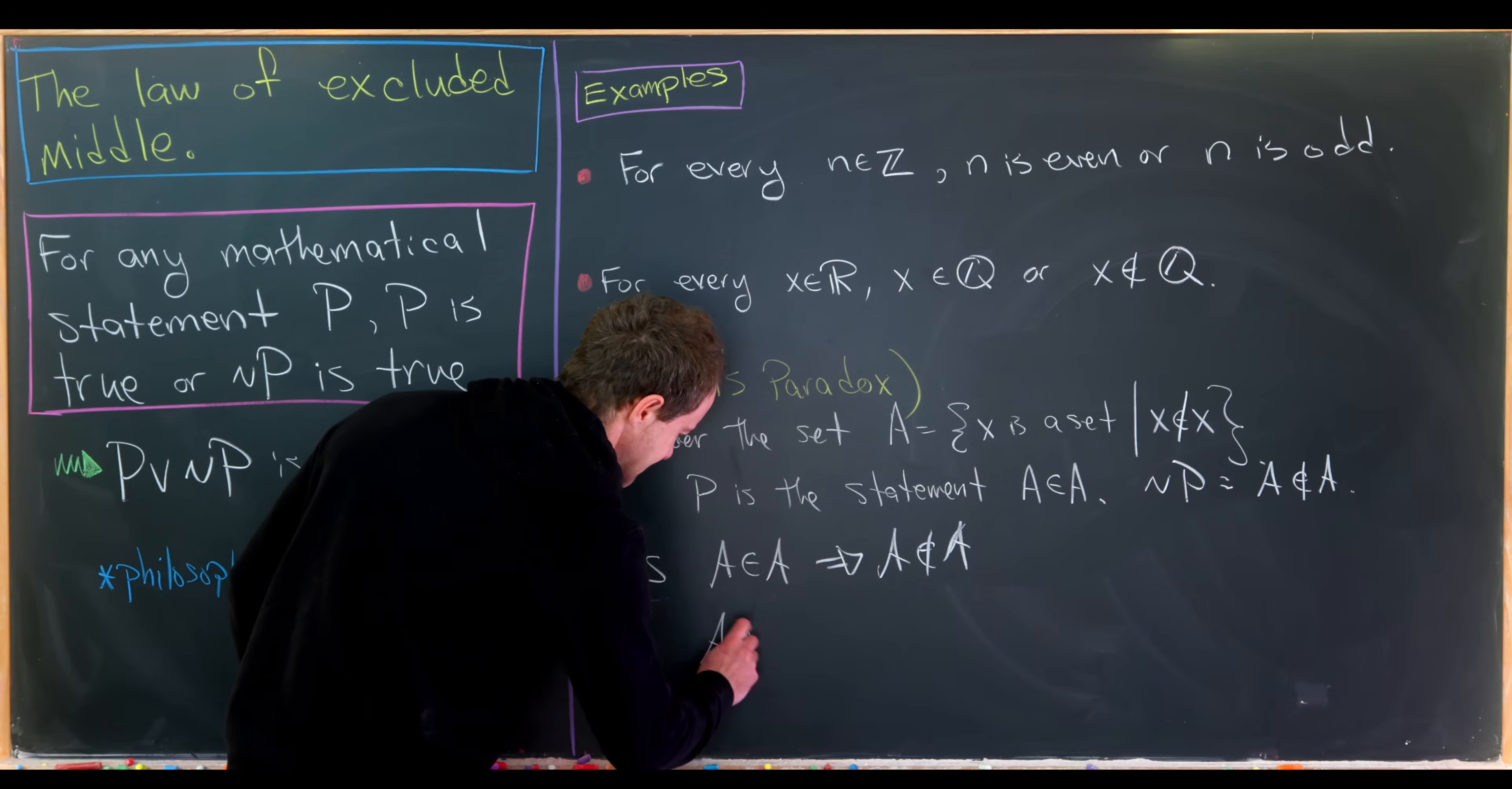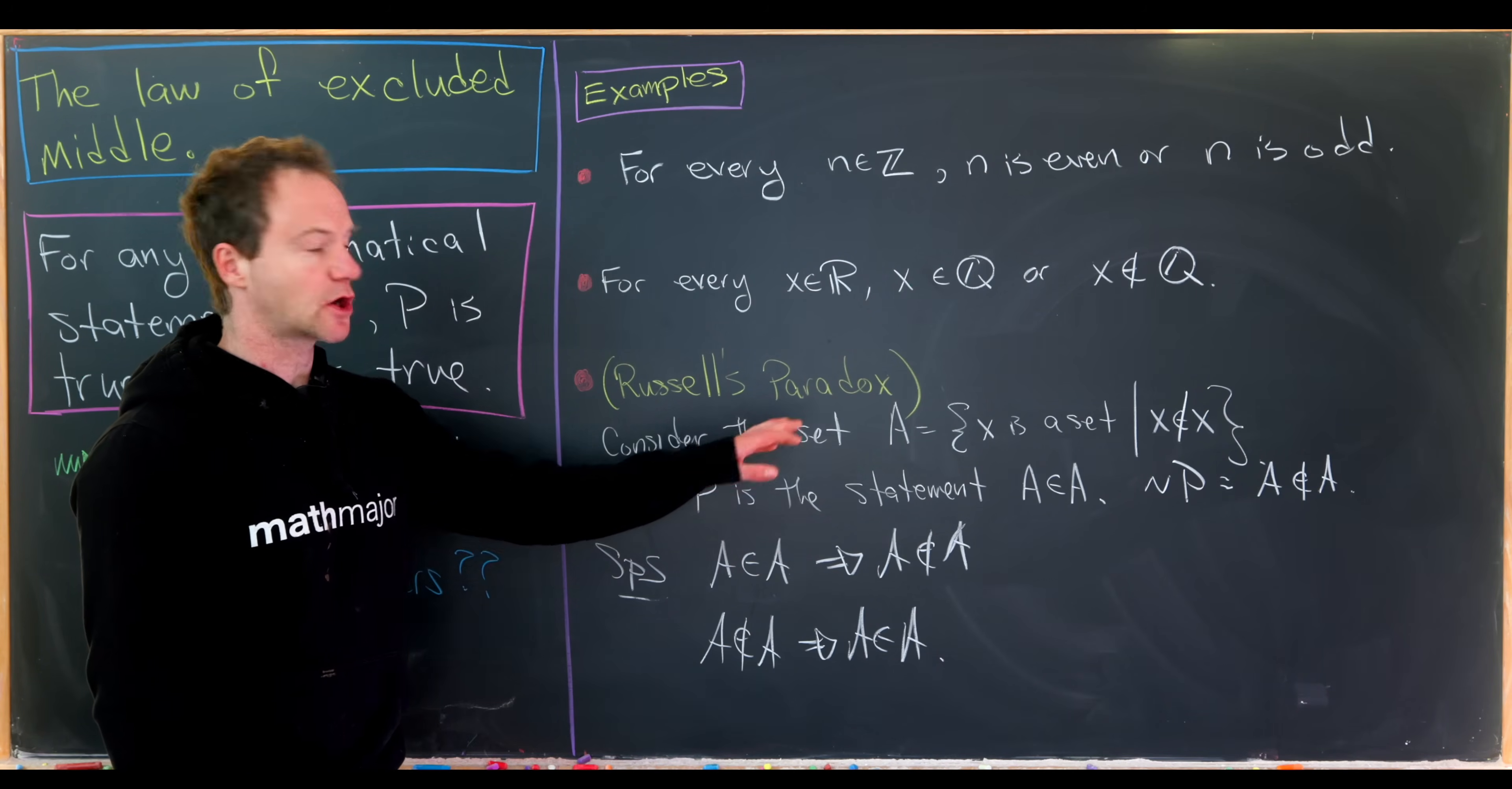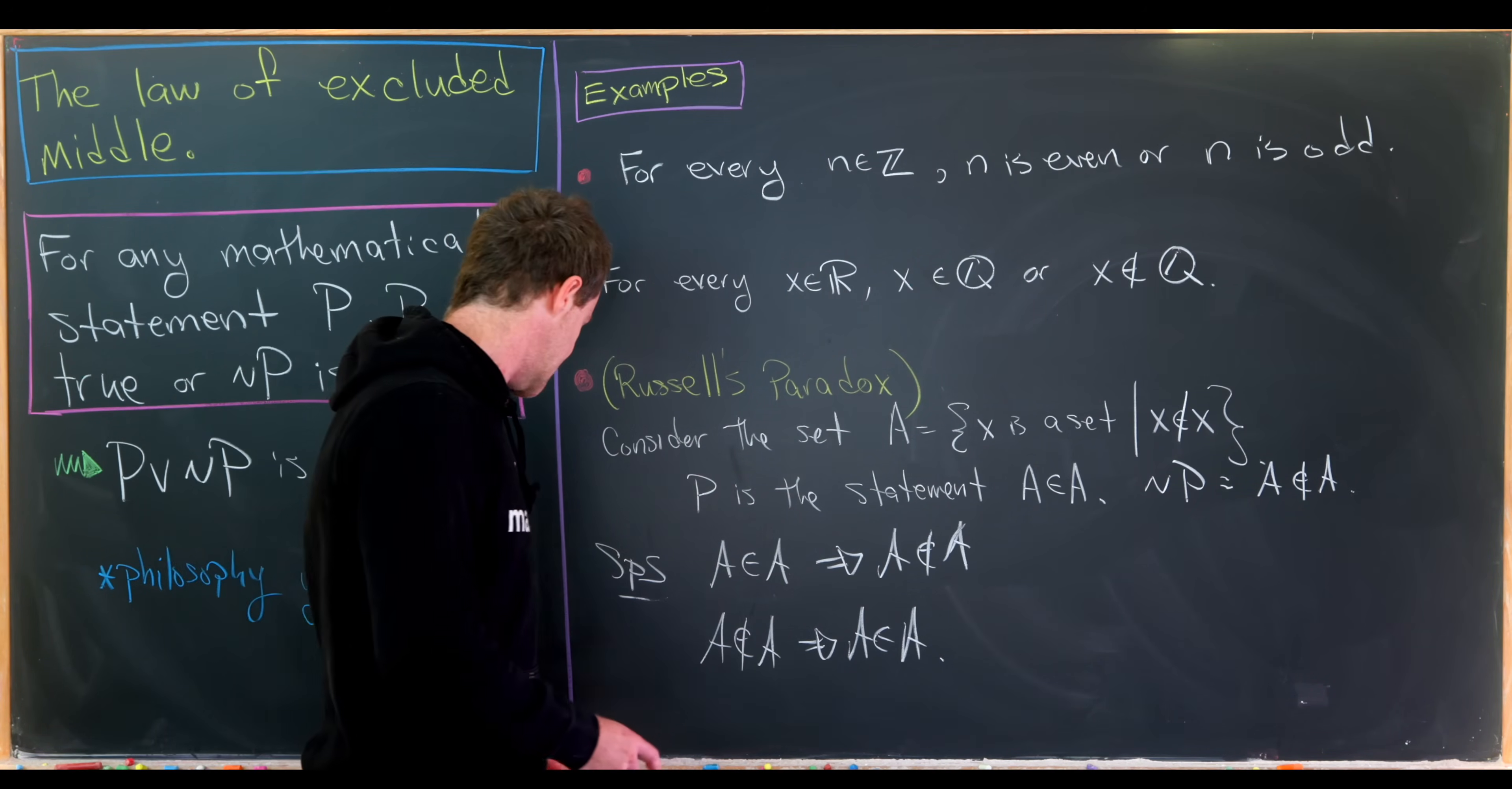So we must have the other case, which is A is not an element of A. But if A is not an element of A, then that means that A is an element of A just based off the rules for becoming an element of A. So that implies that A is an element of A. But that means that P is equivalent to the statement not P. But the law of excluded middle says that one of them is true. But if they're equivalent, if one of them is false, then the other one is false. But that means none of them are true. So anyway, that's where we end up with a problem here.